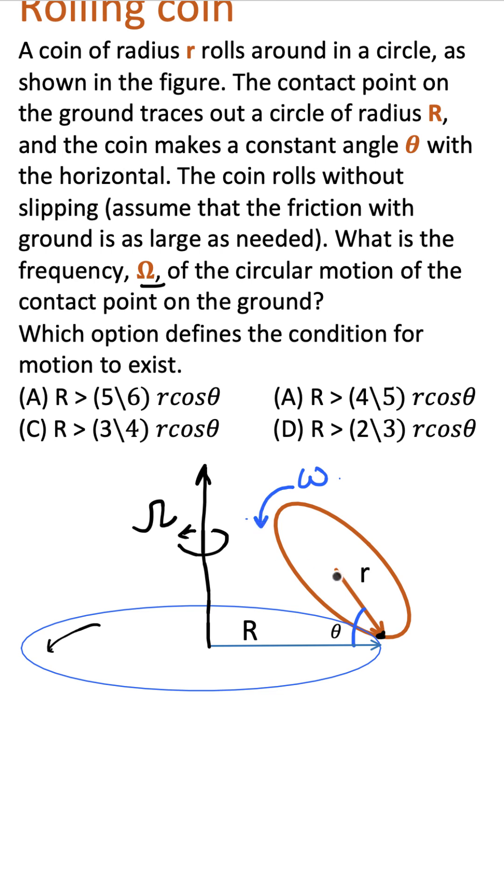You should find out the relation between the two omegas - how omega is related to omega. You can figure this out with the condition that there is no slipping.